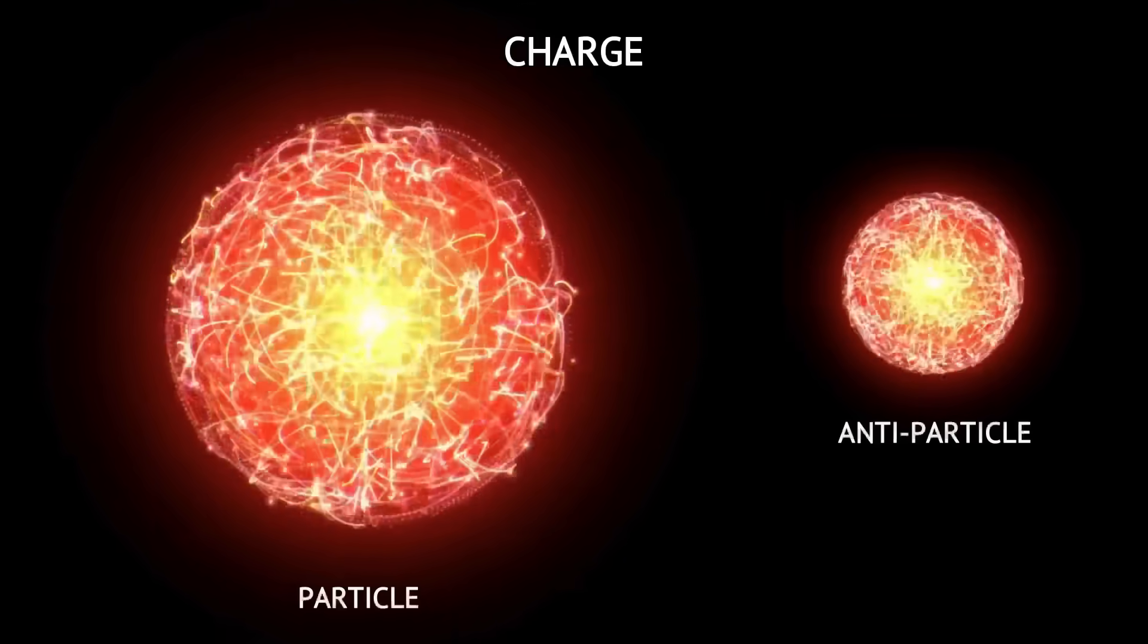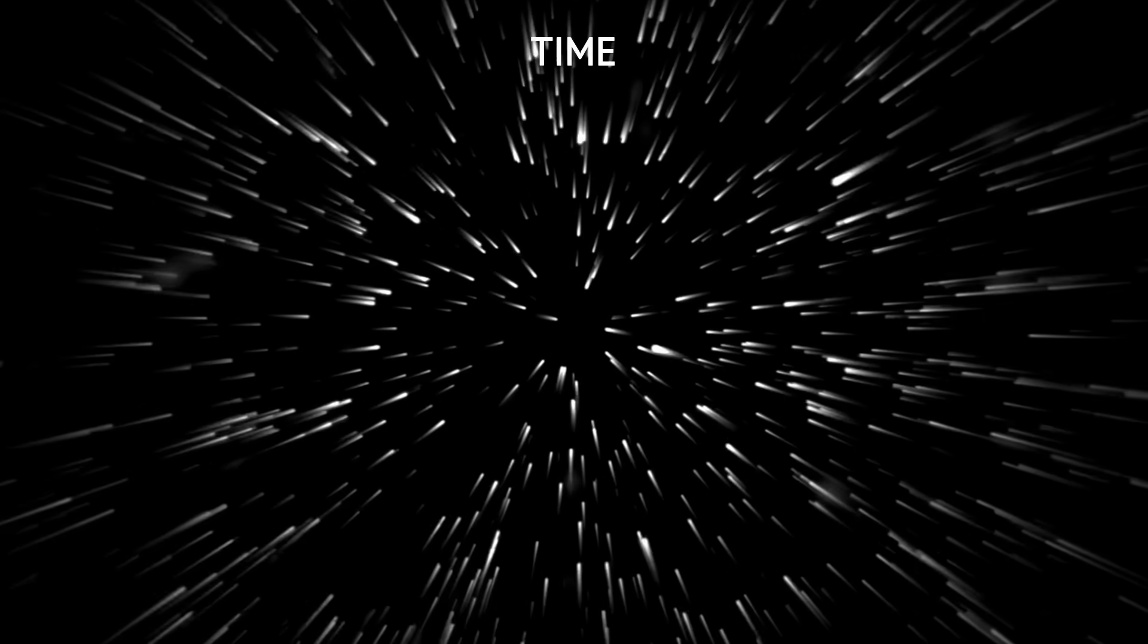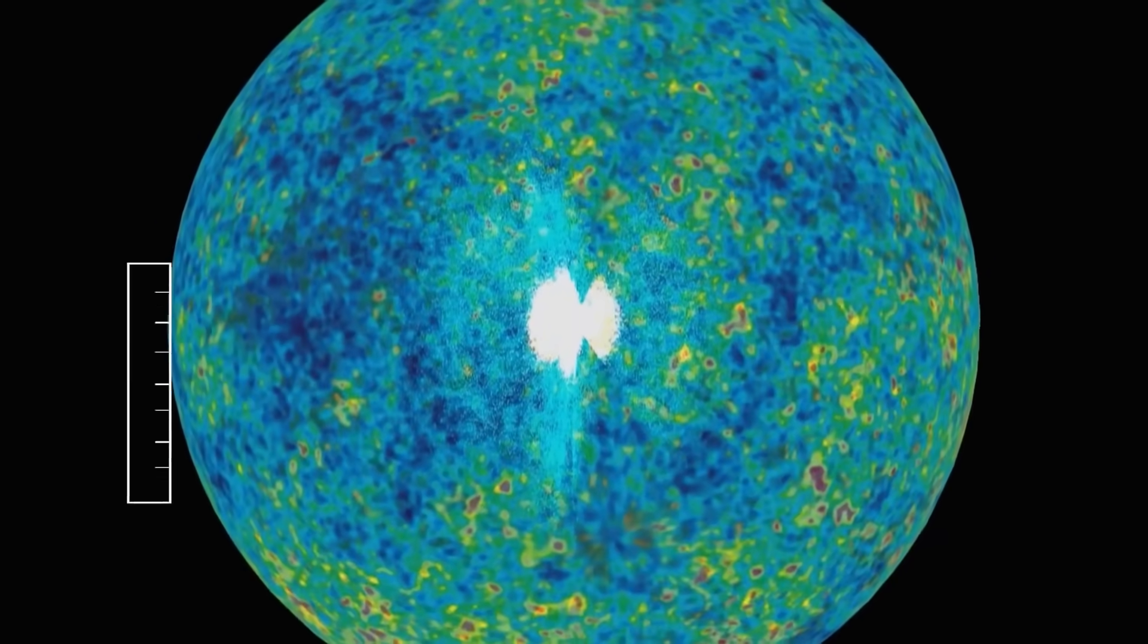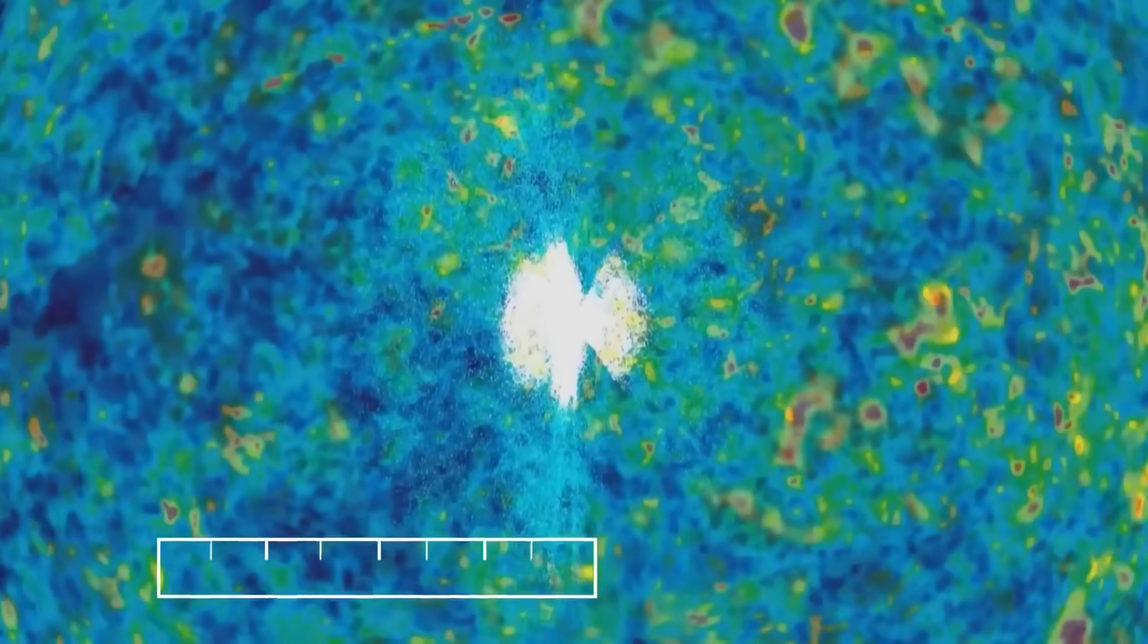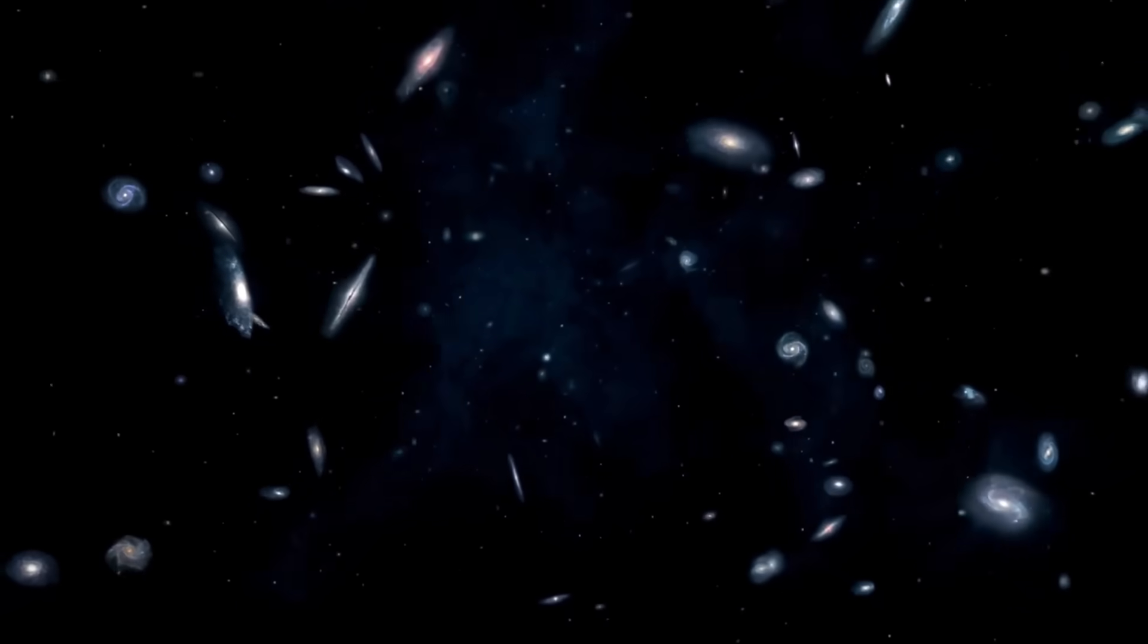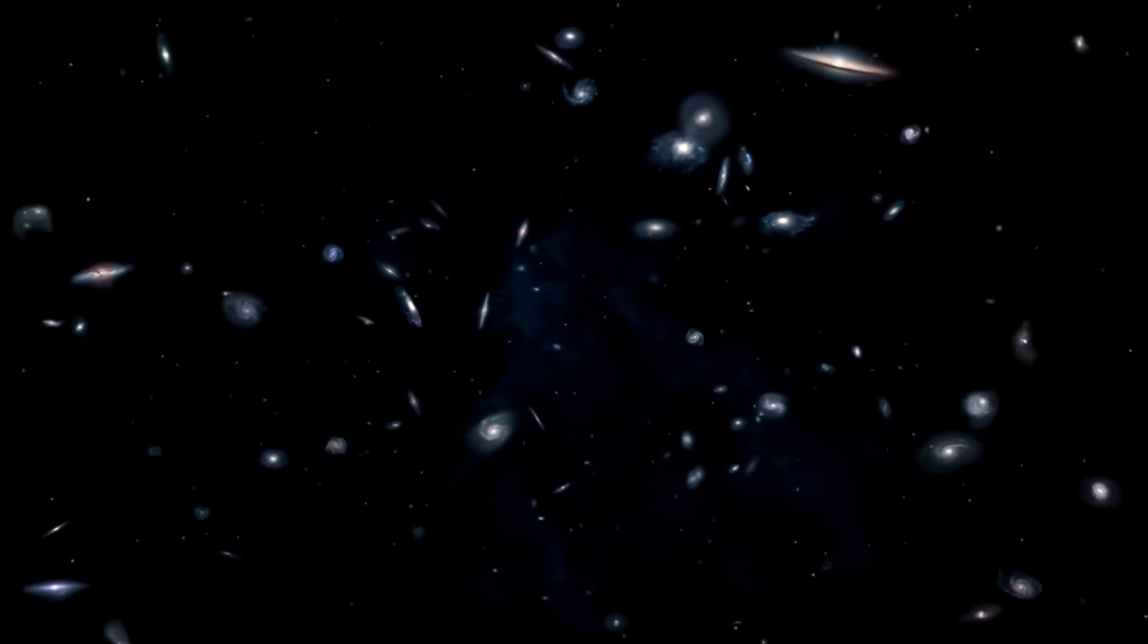Now, let's say that charge swaps matter with antimatter. Parity flips the scene like a mirror reflection, and time rewinds the entire sequence as if moving backward. Now, CPT symmetry says that if you change all three at once—that is, flip charges, mirror everything, and run time backward—the laws of physics stay perfectly unchanged. The universe doesn't break a sweat. It still plays by the same rules, like a well-rehearsed performance no matter how you rearrange it.